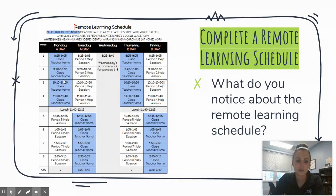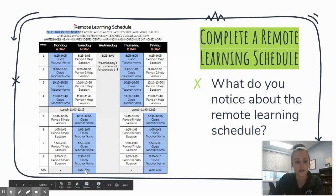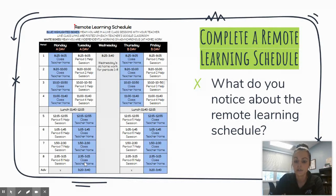Class periods one through four are live and required on Mondays and Thursdays, and periods five, six, seven, eight, and advisory are live classes that are required on Tuesdays and Fridays.